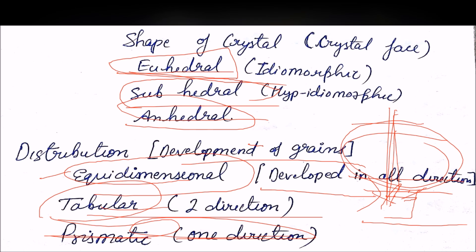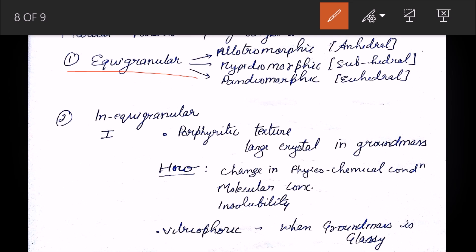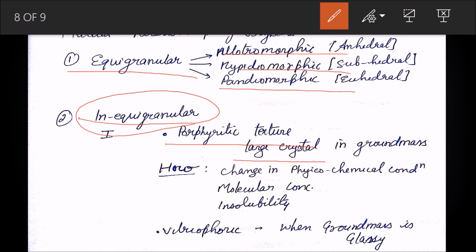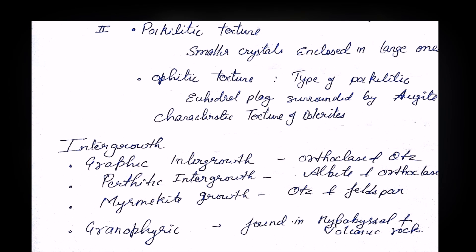Regarding mutual relationships between crystals: if grains are equigranular with good shape, they are panidiomorphic. If equigranular but not well-formed, they are hypidiomorphic. If equigranular with no shape, they are allotriomorphic. If grains are inequigranular — meaning unequal sizes — there is porphyritic texture, where large crystals (phenocrysts) are enveloped in a groundmass. This results from changes in physical-chemical conditions and molecular concentration. When the groundmass is glassy, it is called vitrophyric texture.